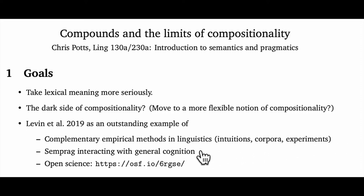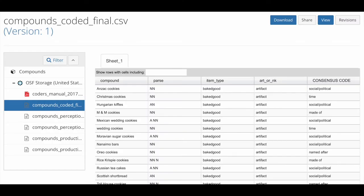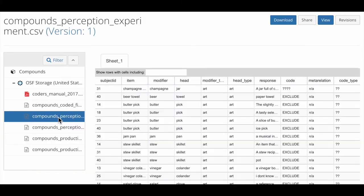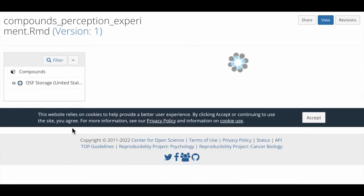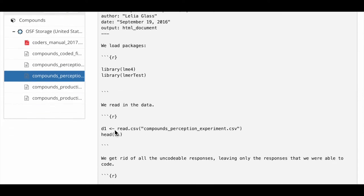They're doing this in the service of addressing really big general questions about language and human cognition. I also love that the paper is so open in the sense of open science — if you follow this link here, you can find their corpus materials, experimental materials, and results. So this resource is just out here waiting to be used to find lots of exciting and interesting follow-up studies.